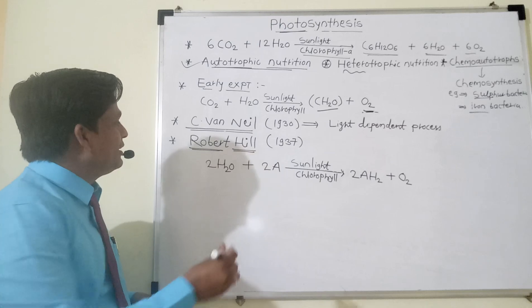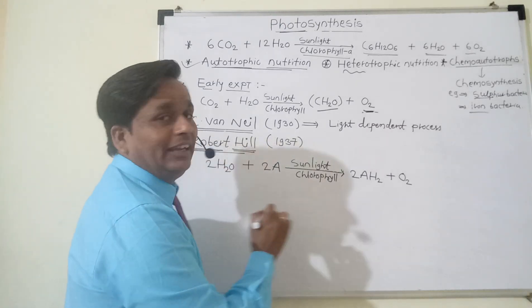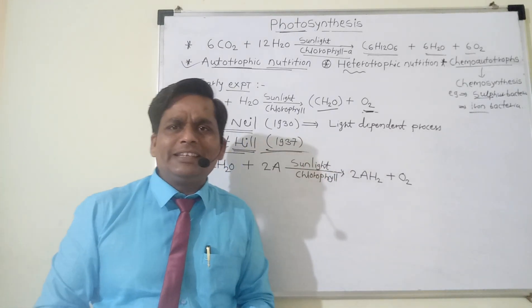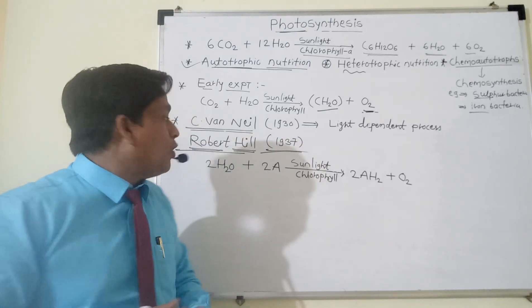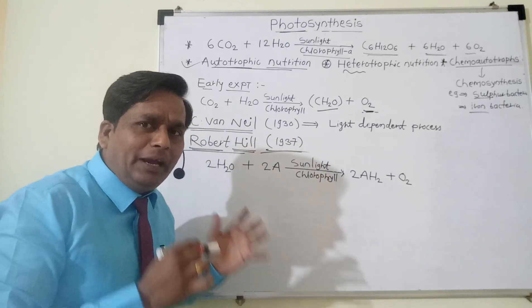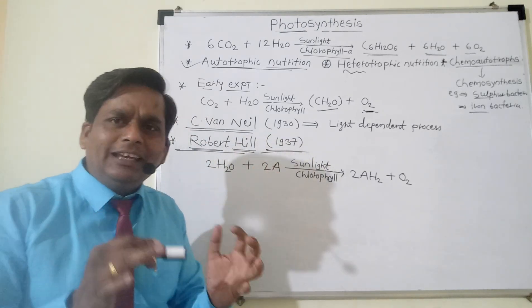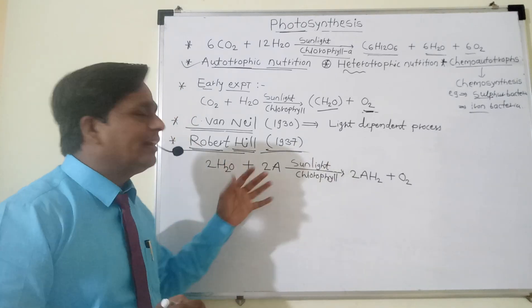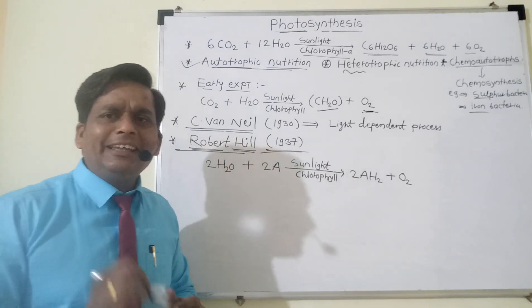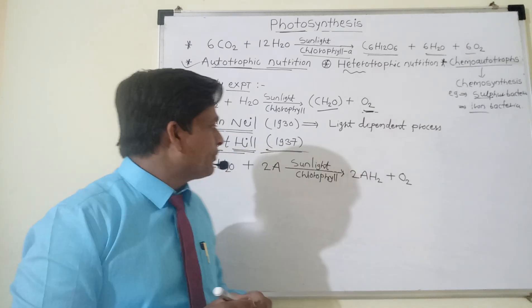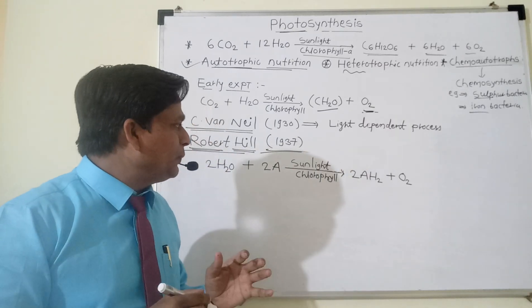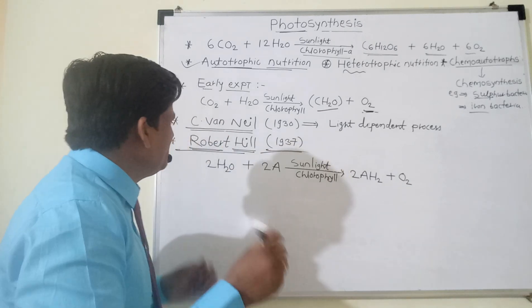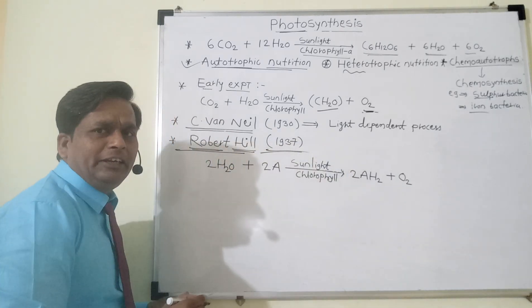The next scientist was Robert Hill in 1937. His experiment is also called the Hill reaction, and the process is also called photolysis of water. Robert Hill in 1937 demonstrated one experiment. According to him, there will be photolysis of water — a very simple experiment he demonstrated.